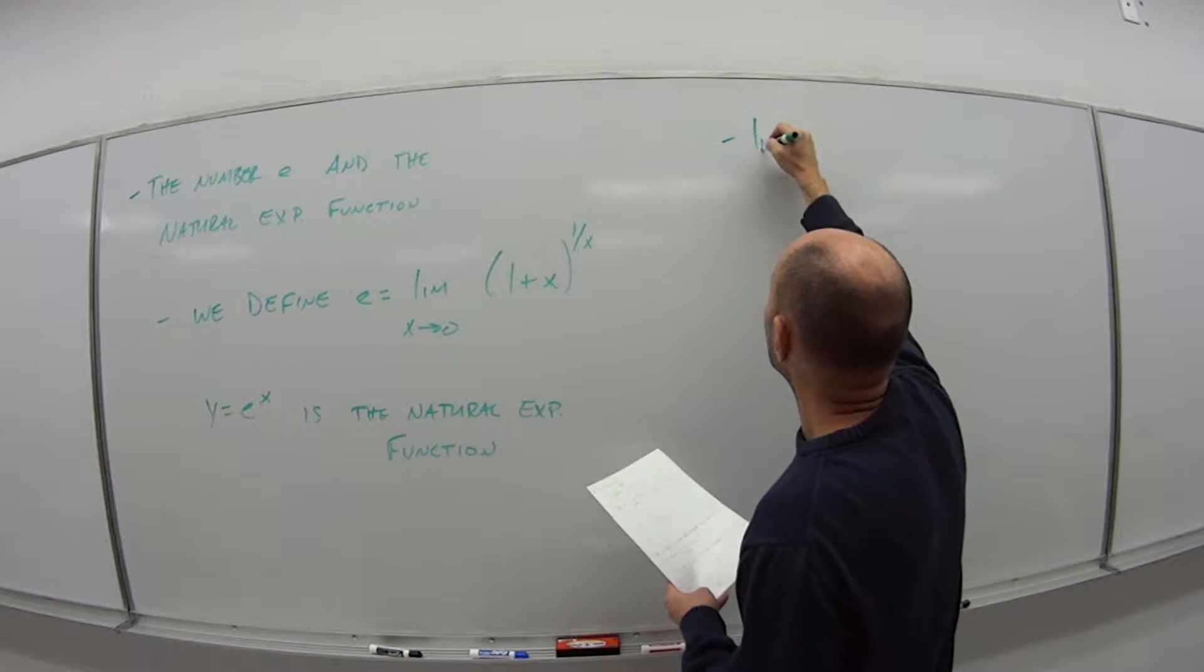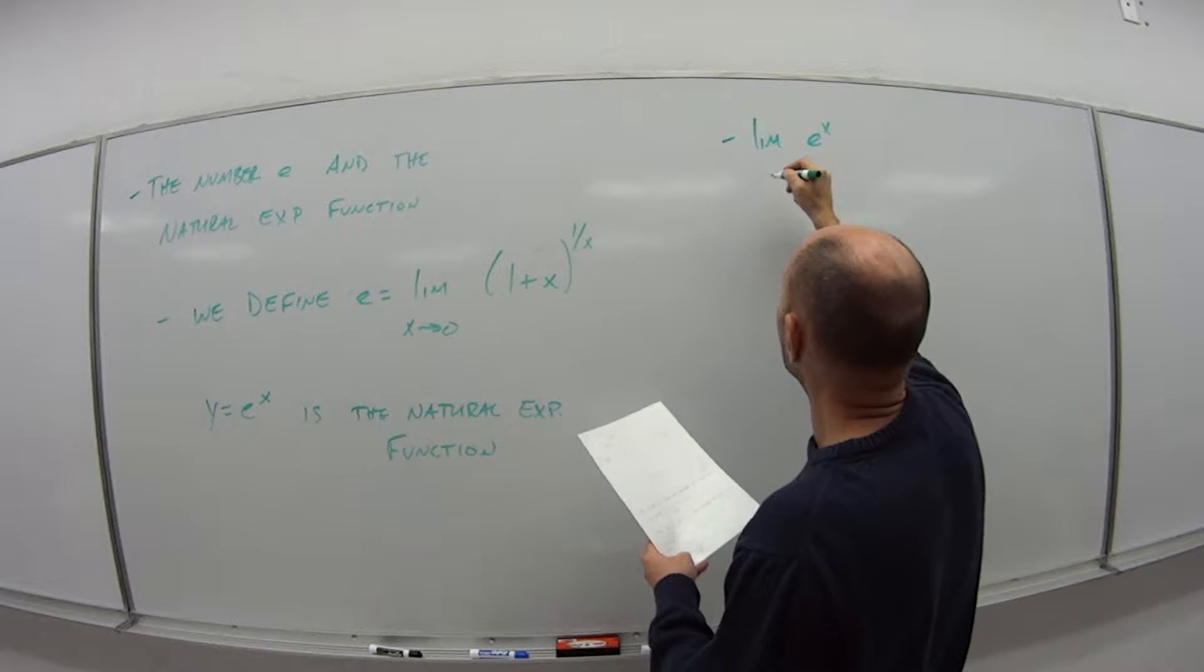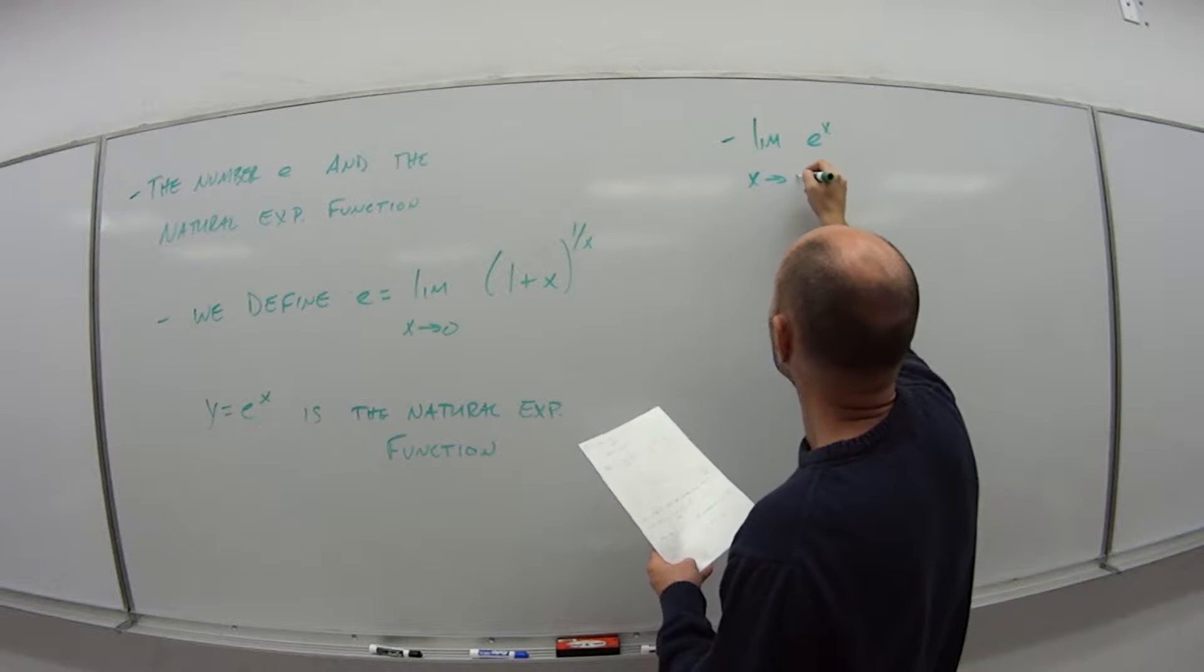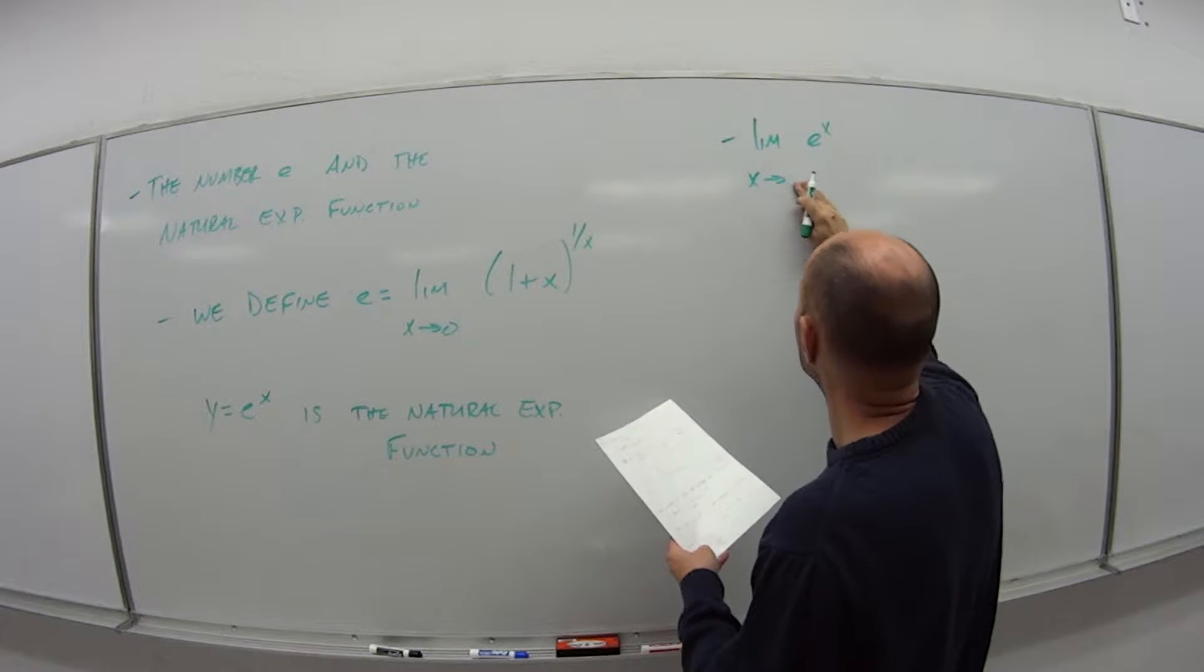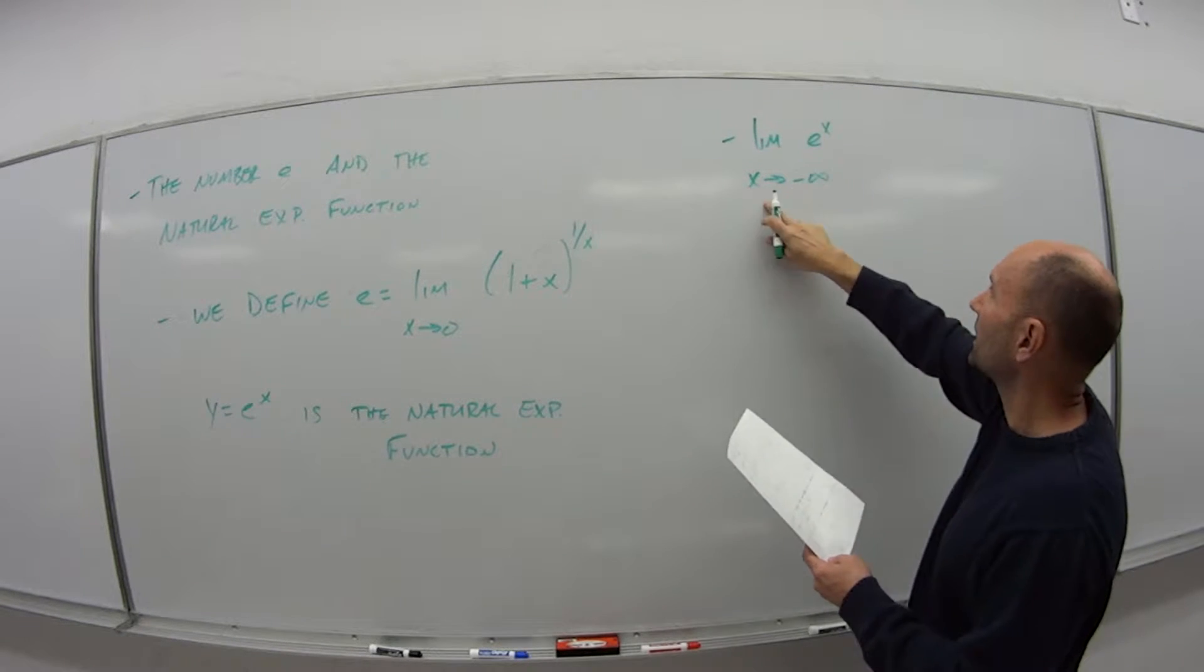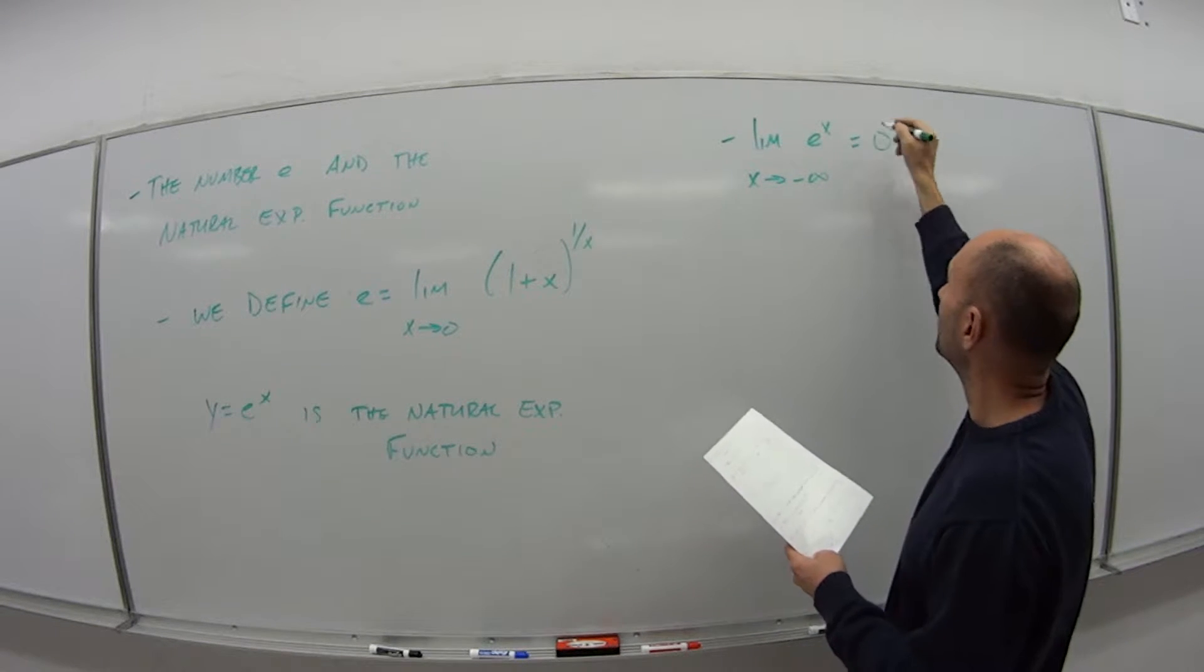We have the following: the limit of e to the x as x goes to negative infinity becomes almost 0. And the limit as x goes to positive infinity of e to the x, because remember e is just our notation for the number 2.719 something, so almost 3 to the infinity power is infinity.